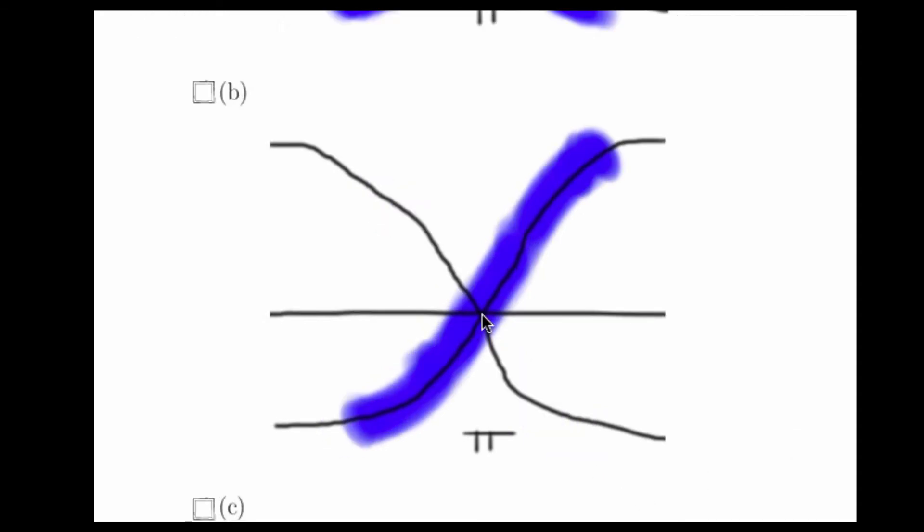Part B looks the most probable. You have stretching along the unstable manifold and you have no growth along the stable manifold. The fact that you can't really see shrinking that well has more to do with the artist's ability, that is my ability, to use sketch pads than anything else. I think this one is the most probable, but let's take a look at the other ones.